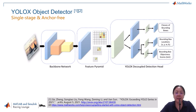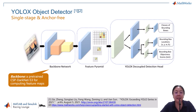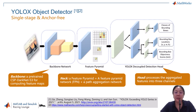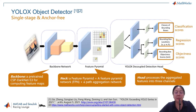YOLOX has three main components. Backbone: this is a CNN called CSPDarknet53, pre-trained on the COCO dataset. It extracts features from the input image. Neck: this part connects the backbone to the head. It uses a feature pyramid network to generate feature maps at different scales, and a path aggregation network to combine features from multiple layers. Decoupled detection head: this part breaks down the features of each bounding box into three channels — classification scores indicating the predicted class of the bounding box, regression scores providing the location, width, and height of the bounding box, and objectness scores reflecting the confidence level that the bounding box contains the object.